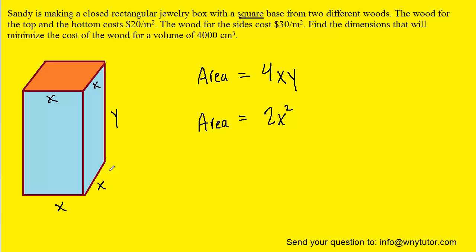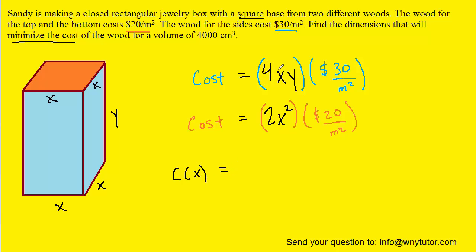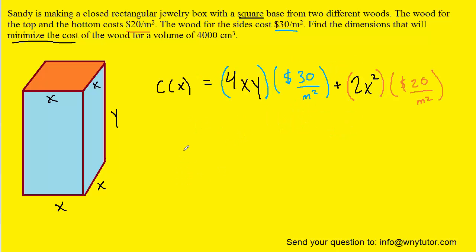The question doesn't want us to minimize the area per se — it wants us to minimize the cost. So we have to convert the area expressions into cost. We take the area of the sides and multiply by $30 per meter squared, giving us the cost of the sides. Similarly, we multiply the area of the top and bottom by its cost per meter squared. The total cost function is simply these two costs added together.